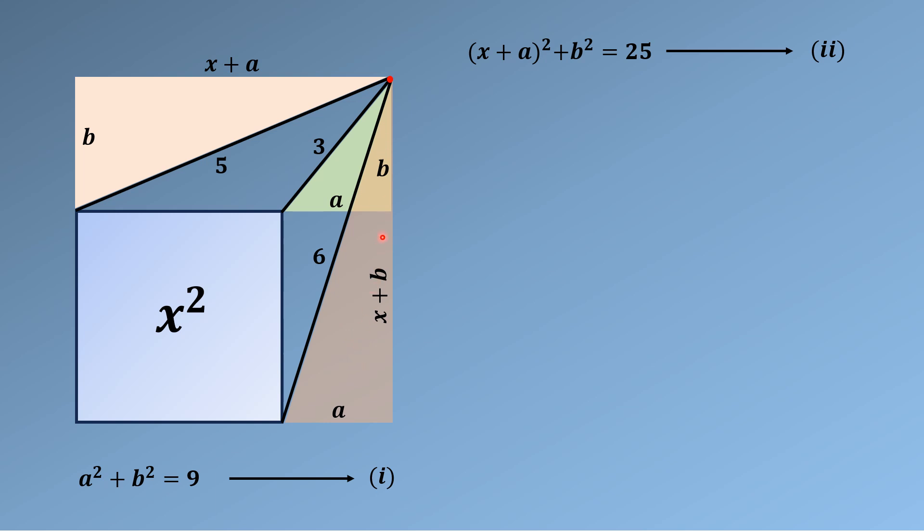We have (X + b)² + a² = 6². And let's call this equation as equation number three.